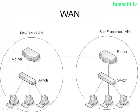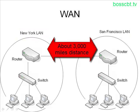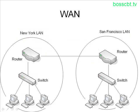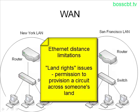So instead of having two buildings that are right next door or a couple hundred yards apart, now we have two local area networks in two different cities — New York and San Francisco — about 3,000 miles apart. Connecting these two by simply running an ethernet crossover cable between two switches isn't possible anymore. Ethernet has distance limitations, and even without those, running that cable across the country just isn't feasible.